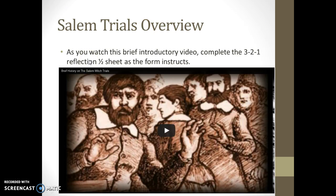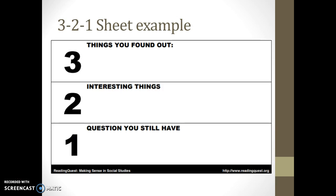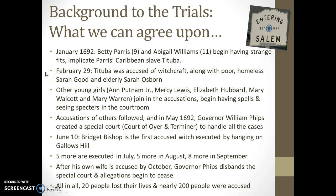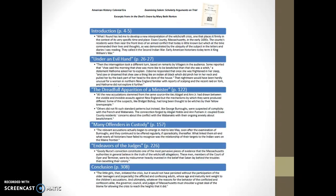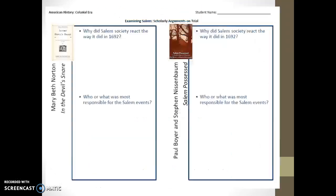At long last, we finally get into the witch trials themselves. Students will get an introduction with a short video clip and fill out a simple reflection form. I'll then provide one slide of background that historians have agreed upon, pointing out the role played by young girls — a social anomaly — and the number of people ultimately involved in the trials. As the culminating activity, students will take two historical arguments to answer: why did Salem society react the way it did, and who or what was most responsible? They'll consider excerpts from Mary Beth Norton as well as Paul Boyer and Steven Nissenbaum, completing a worksheet to record their thoughts.